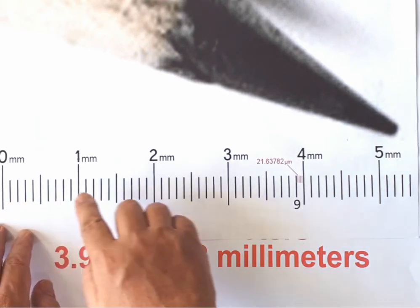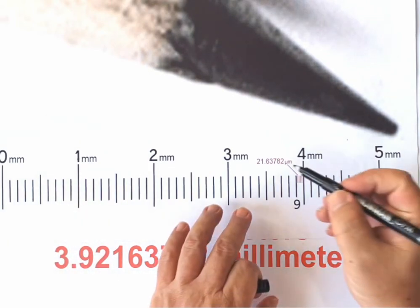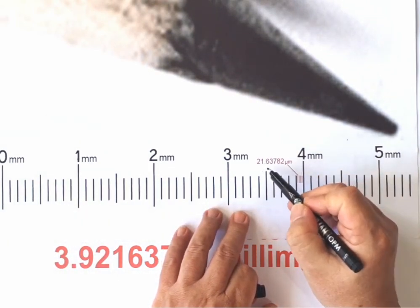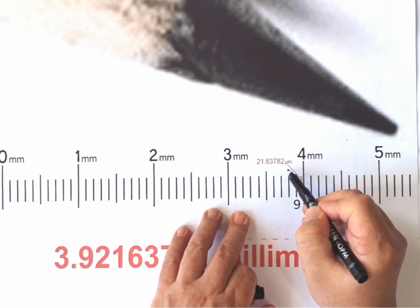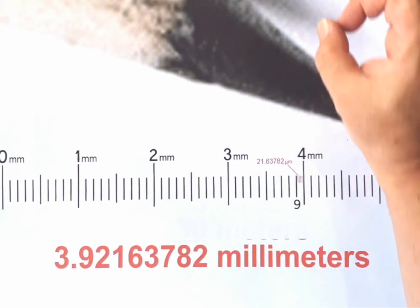Zero, 1 millimeter, 2 millimeters, 3 millimeters, 0.9, and 21.6782 microns. Well, well, this is what I call precision.